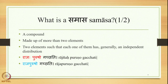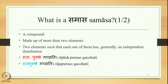The main characteristic of the compound is that it is made up of two or more elements, such that each one of them has generally an independent distribution. A compound is made up of two elements, or sometimes even more than two elements, such that each one of them has generally an independent distribution. And here are the examples.